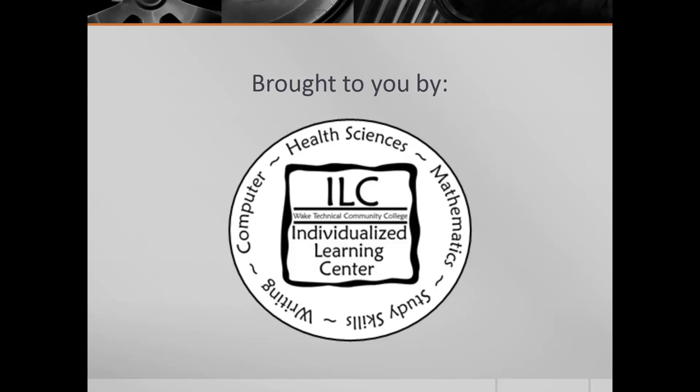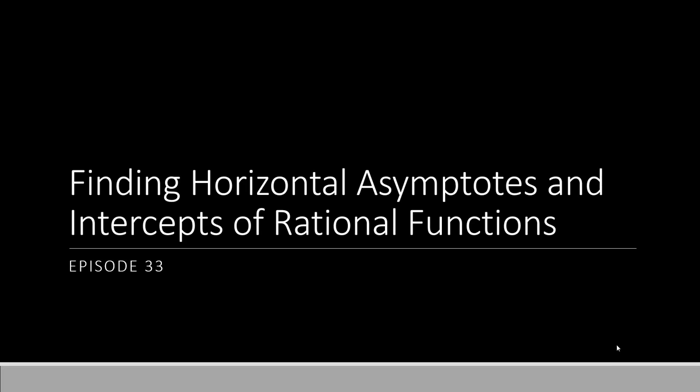This video was brought to you by the ILC. Hello there once again. Welcome to episode 33, Finding Horizontal Asymptotes and Intercepts of Rational Functions. In our previous episode, we found the vertical asymptotes and holes of a rational function. This time we're going to learn how to get a little bit more information from a rational function. Let's get started.